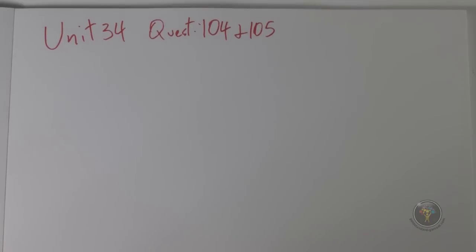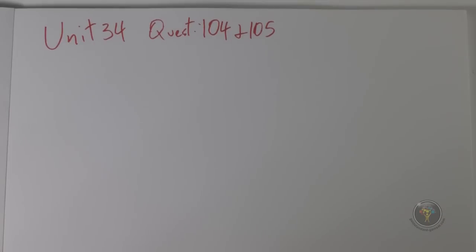Question 104 asks: the greatest decline in salmonella numbers occurs during which period? It lists different days, and you could be tempted to pick answers like the fifth, sixth, or seventh day because of the way the graph is broken. But you have to be careful about one major point — that exponential part on the left-hand side of the curve means some very strange things are going on.